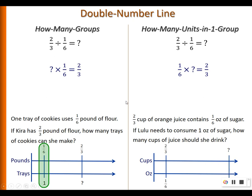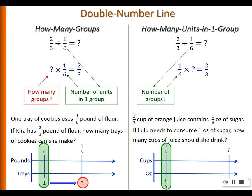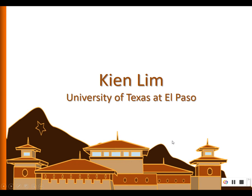Let's revisit how the two types of problems differ. For 'how many groups,' we are told how many units are in one group — 1/6 pound per tray — and asked how many groups of 1/6 pound fit in 2/3 pound. For 'how many units in one group,' we are given a fractional relationship: 1/6 ounce corresponds to 2/3 cup, and we want to find how many cups are in one full ounce.